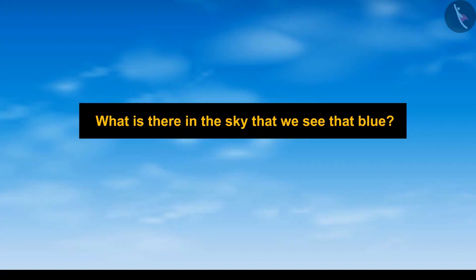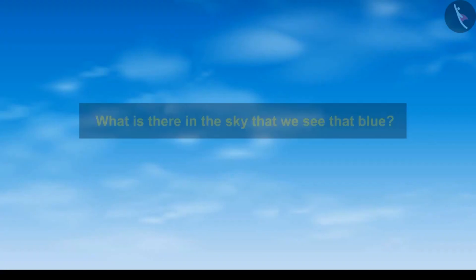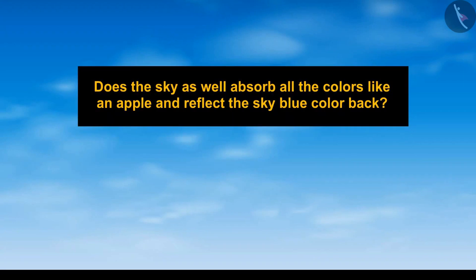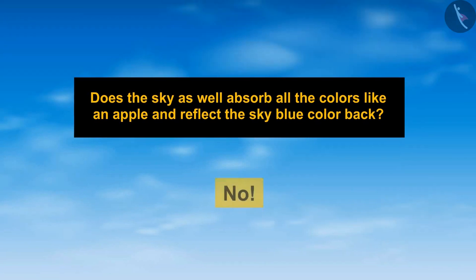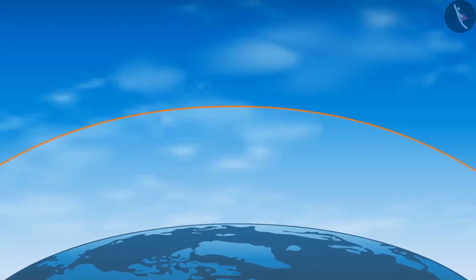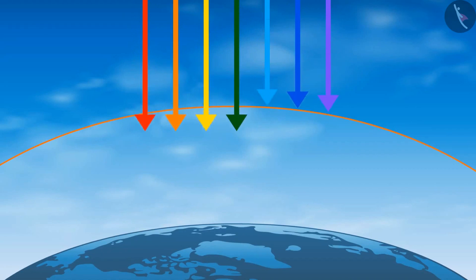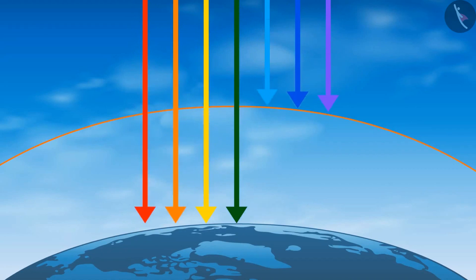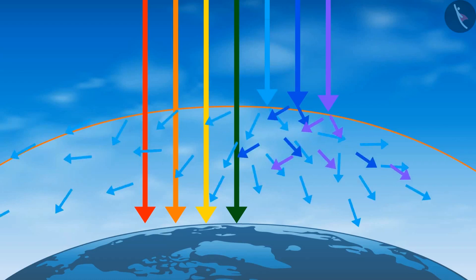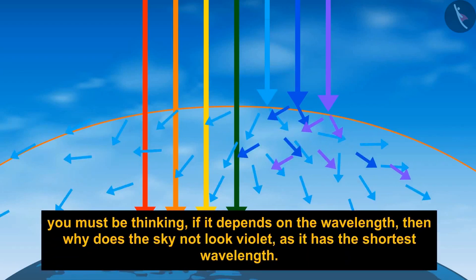So what is there in the sky that makes it appear blue? Does the sky absorb all colors like an apple and reflect blue back? The answer is no. When the seven colors of sunlight enter our atmosphere, they pass through molecules of air and fine particles that are comparable in size to the wavelength of light. These particles scatter the blue light, making the sky appear blue. You might then wonder — if it depends on wavelength, why doesn't the sky appear violet, since violet has the shortest wavelength?